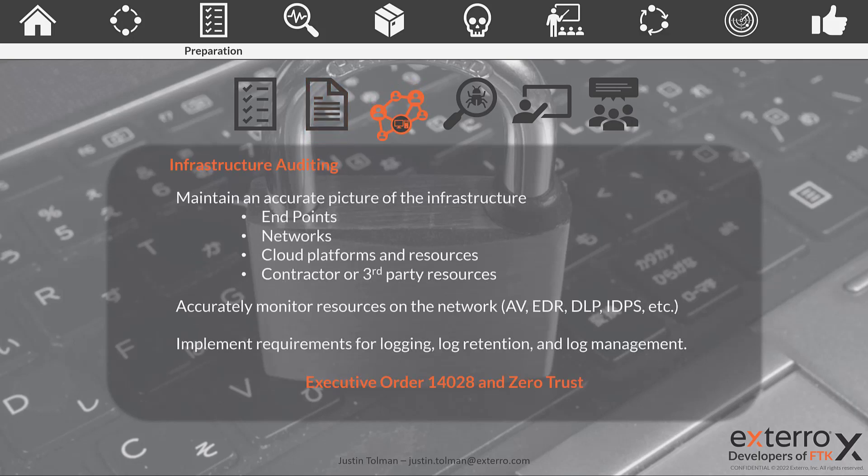Moving on to infrastructure auditing — this is super important, not just for the playbook, but it is pulled directly from Zero Trust and Executive Order 14028 from 2022. You need to maintain an accurate picture of your infrastructure. This includes your endpoints, your networks, what's connected to what, what resources are connected to what network, IP maps, your cloud platforms and resources, and software that you're using.